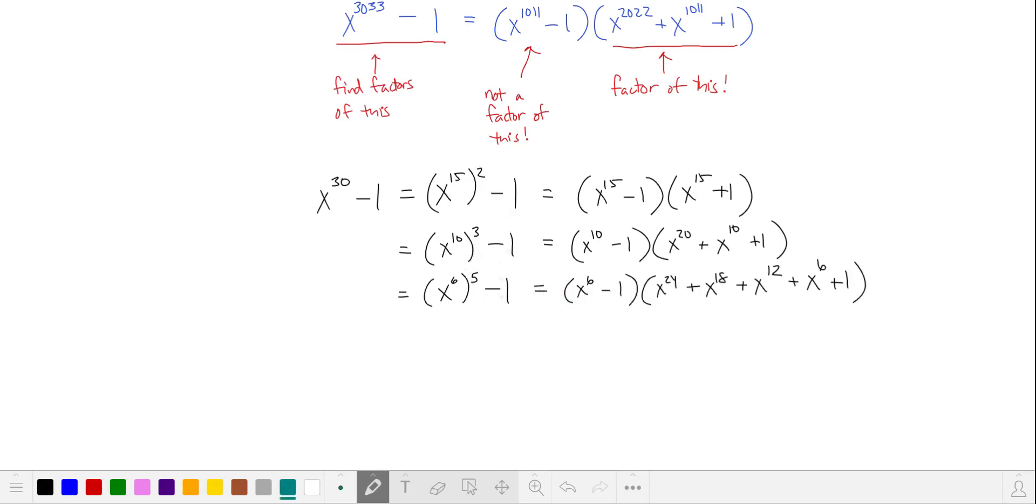We can also reverse these powers, so this can be written as the difference of sixth powers. But the important observation here is the type of factorization that we can pursue depends on the factors that we can create from this exponent 30.